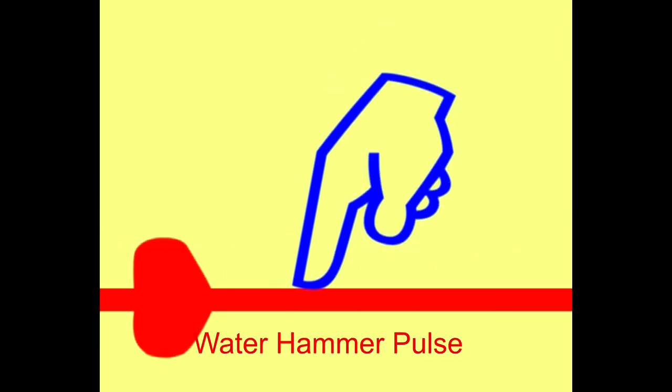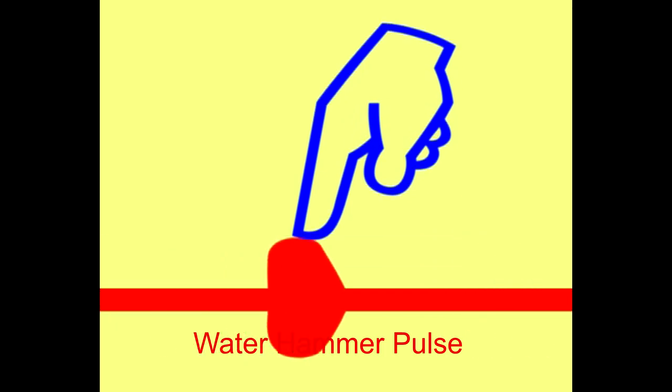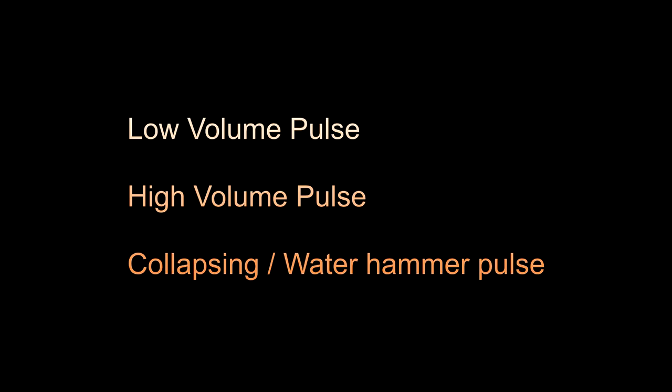The water hammer pulse is an exaggerated form of bounding or collapsing pulse, felt by grasping the patient's forearm with the palm covering the flexor aspect and raising it vertically above the patient's head. It is named after an ancient toy — a long sealed glass tube containing water and vacuum; when inverted, the water would suddenly drop through the vacuum imparting a palpable shock, compared with the shock felt in the pulse of aortic regurgitation. The sudden jerky rise is due to extra large blood volume pushed by the distended left ventricle during systole, and the collapse is due to sudden fall of pressure in the aorta from regurgitation of blood back into the left ventricle.